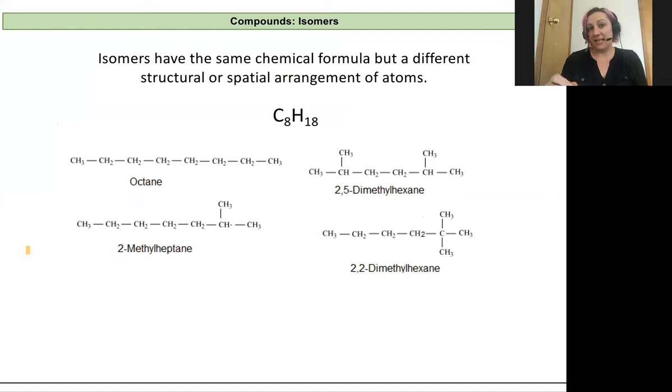Here we're taking that octane example again, so we have eight carbons and 18 hydrogens. Here are just a few of the different isomers that we can form: two-methyl heptane, two-five-dimethyl hexane, two-two-dimethyl hexane.